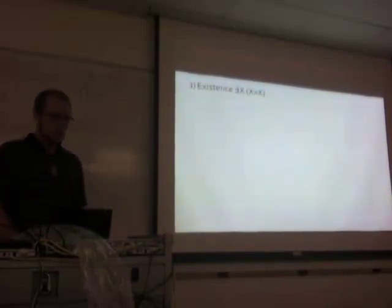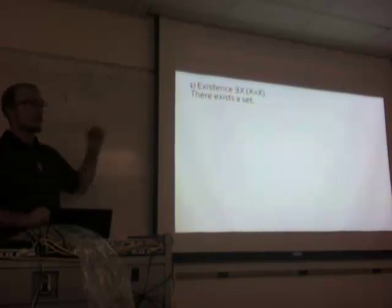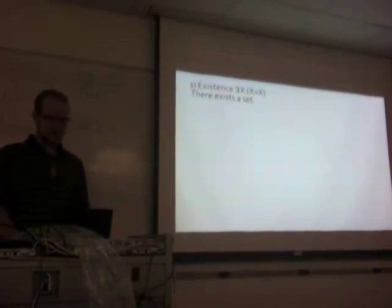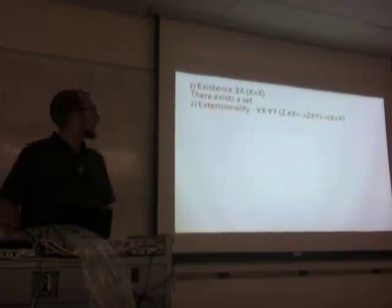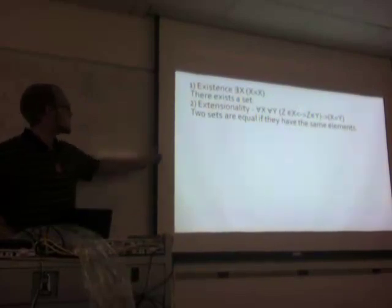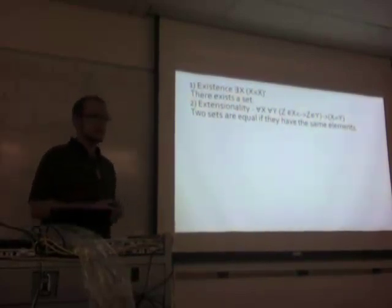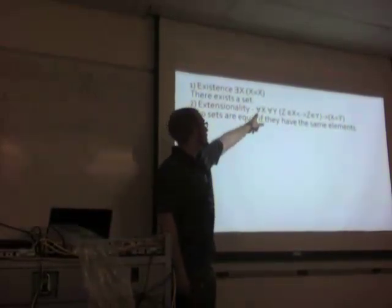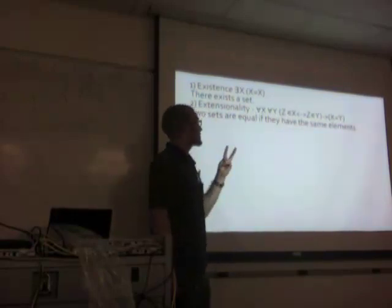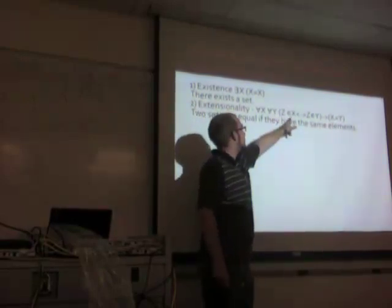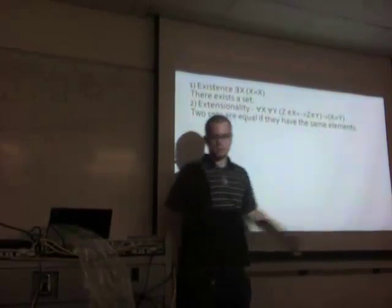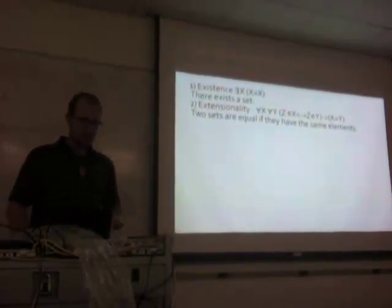Our first axiom is existence: you have to know something exists if you want to start talking about it. If you don't know it exists, where do you begin? So we have to first postulate that a set does exist. Next we have extensionality, which says two sets are equal if they have the same elements. In logical notation: for every x, for every y, if an element of x is always an element of y and vice versa, the sets are equal. This is the axiom of extensionality.